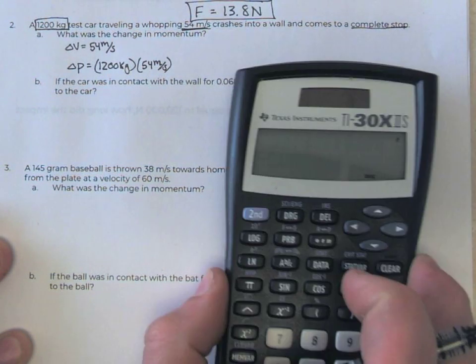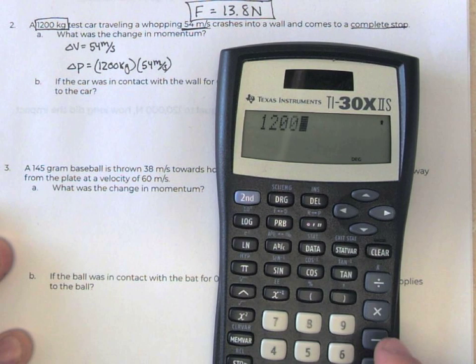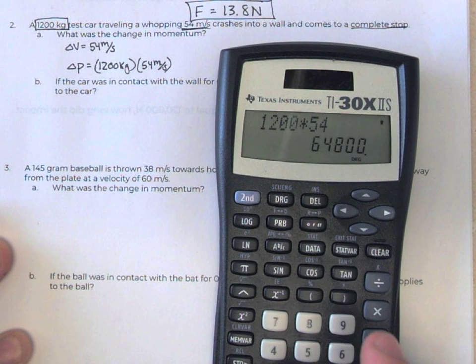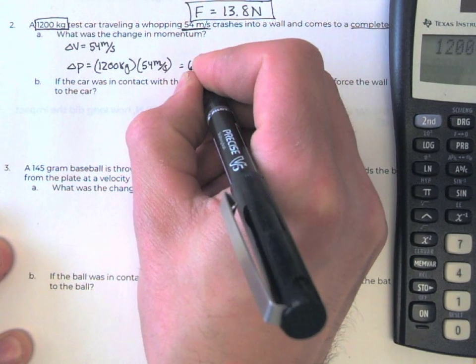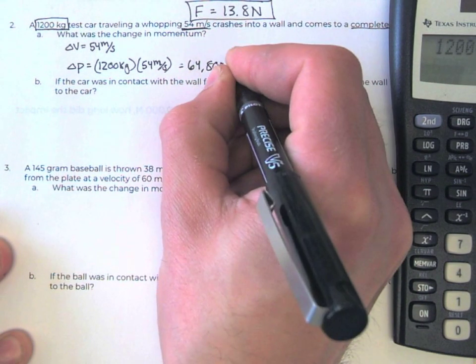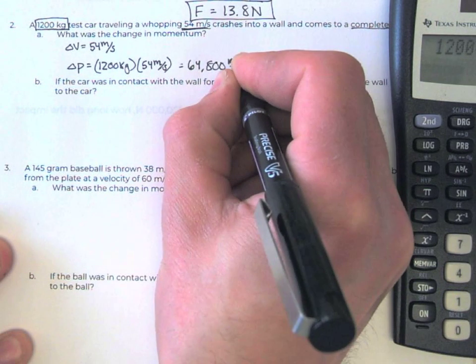So we're going to get 1200 times 54, 64,800 kilograms times meters per second. That's a lot.